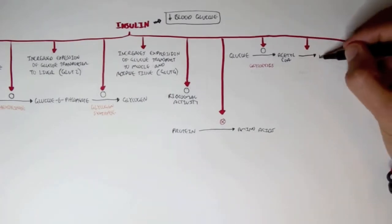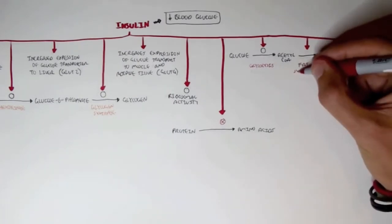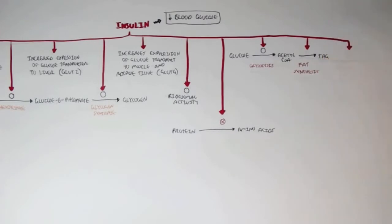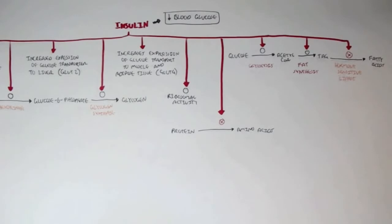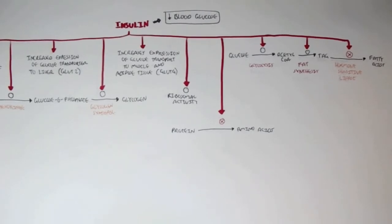Insulin promotes fatty acid synthesis from acetyl-CoA to triacylglycerols. Finally, insulin inhibits hormone-sensitive lipase, which is responsible for the degradation of triacylglycerols to fatty acids. Insulin also prevents beta-oxidation — the conversion of fatty acids into acetyl-CoA.